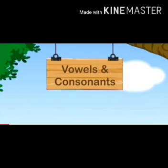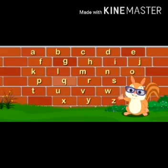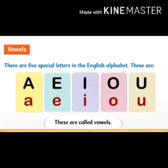In our previous video, we learnt about vowels. Now we will be learning about consonants. So let us start with our topic, vowels and consonants. Children, as you all know, there are 26 English alphabets. In these 26 alphabets, there are 5 special letters: A, E, I, O, and U. These 5 alphabets are known as vowels, which we have already learnt in our previous video.